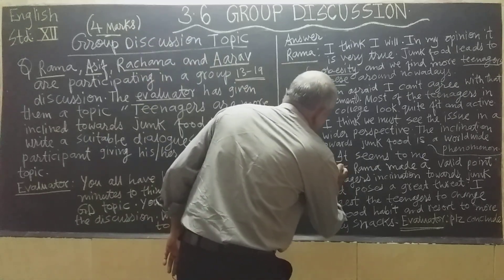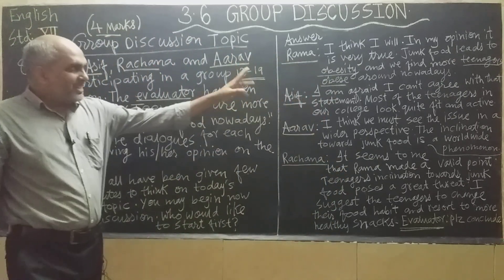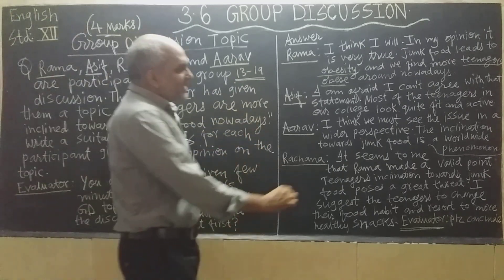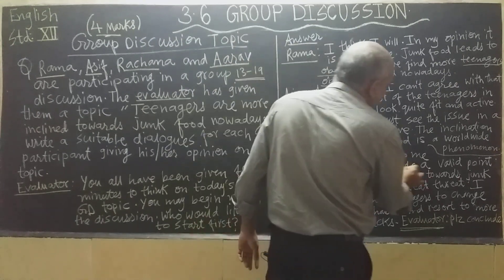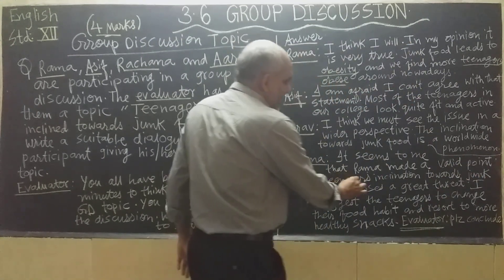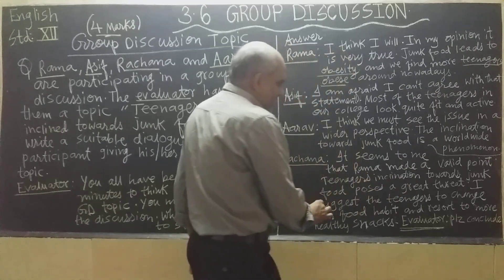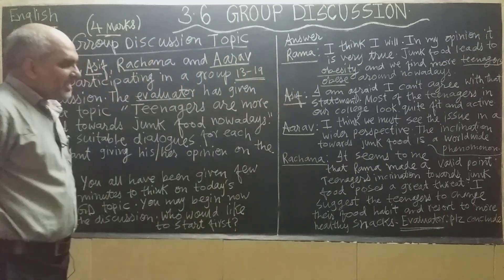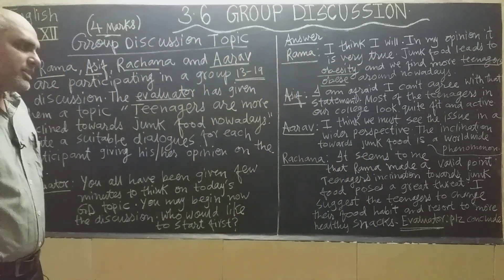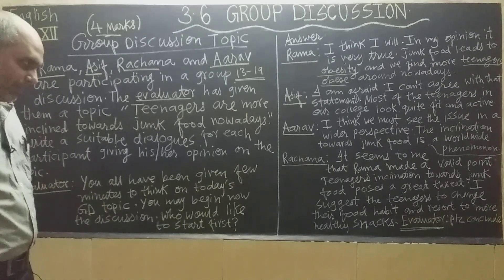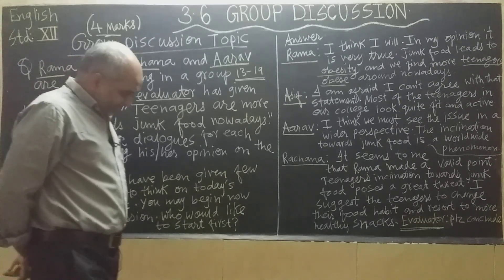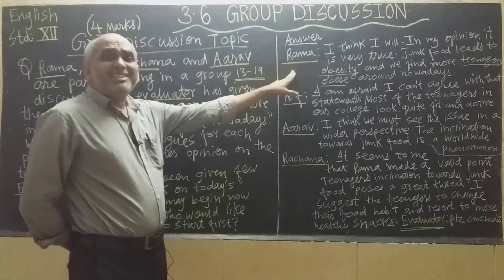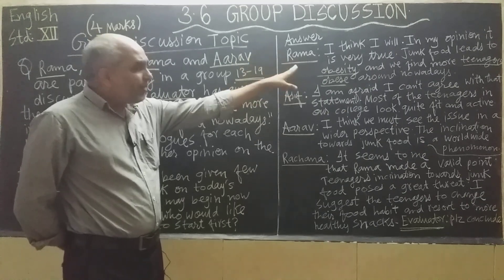The fourth candidate, Rachana, says: 'It seems to me that Rama made a very valid point — teenagers' inclination towards junk food causes a great threat. I suggest teenagers change their food habit and resort to more healthy snacks.' Rachana has taken the thread of the discussion from Rama and balanced the conversation in a positive direction.